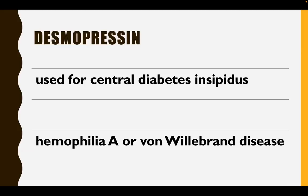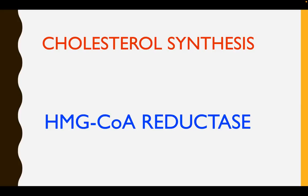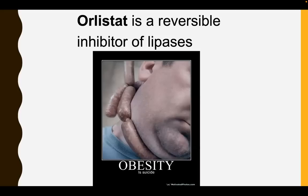What about desmopressin? This is used for central diabetes insipidus as well as hemophilia A or von Willebrand's disease. What about HMG-CoA reductase inhibitors — the statins? They inhibit the rate-limiting step in cholesterol synthesis. Watch out for statins because they are notorious for causing hepatotoxicity as well as myositis. Orlistat is a reversible inhibitor of lipases, particularly lipoprotein lipase, which is the clearing factor for most dietary fat. This is an anti-obesity drug.